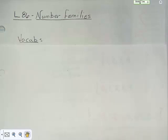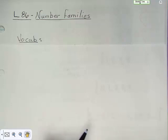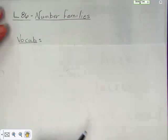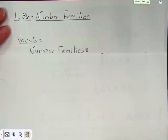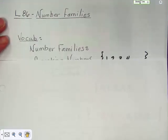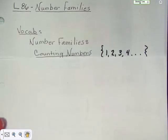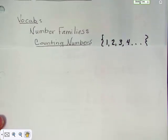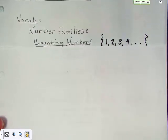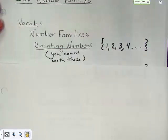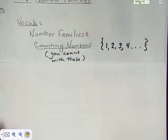Hi there. Today we're going to talk about lesson 86, and lesson 86 has to do with number families. There's a little bit of vocabulary that you need to know. One of the number families we're going to be talking about is called the counting numbers, and we count with the counting numbers. We don't start with zero when we count — we count one, two, three, four.